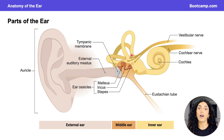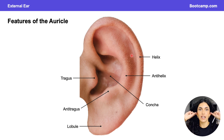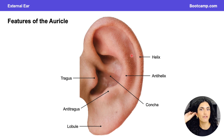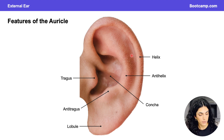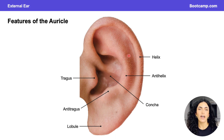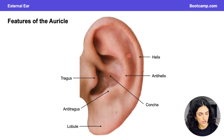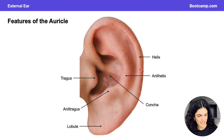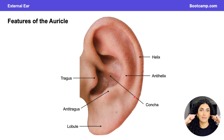Now let's focus specifically on the external ear, starting with the auricle. The auricle consists of elastic cartilage, which is why it's so flexible. The elastic cartilage, along with the elevations and depressions you can see here, allows for the transmission and amplification of sound waves, funneling them into the external acoustic meatus. The first elevation is the helix, which runs along the outer rim and forms the outer edges along the more posterior aspects of the auricle.